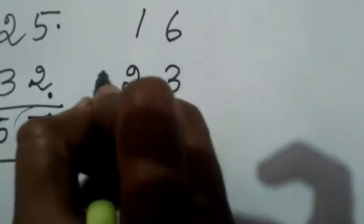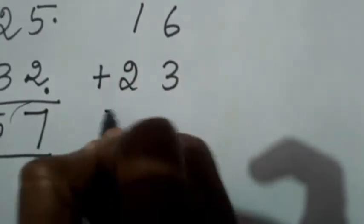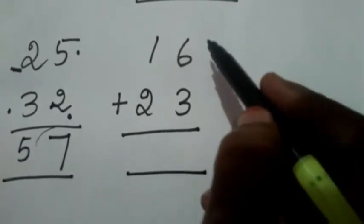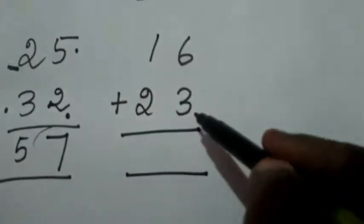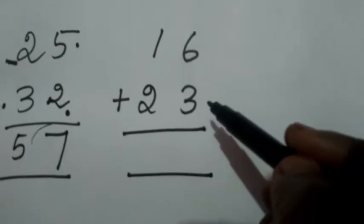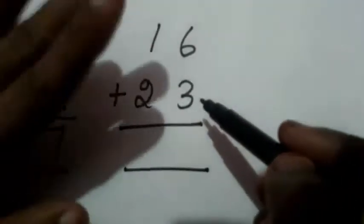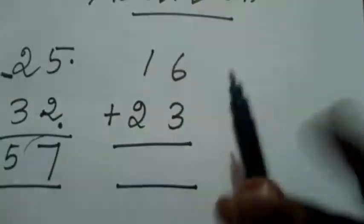Then 16 plus 23. Here, what are the first-digit numbers? 6 and 3 are the first-digit numbers, so you have to add 6 and 3. 6 in your mind and 3 on your finger. 6 after: 7, 8, 9. Answer is 9.